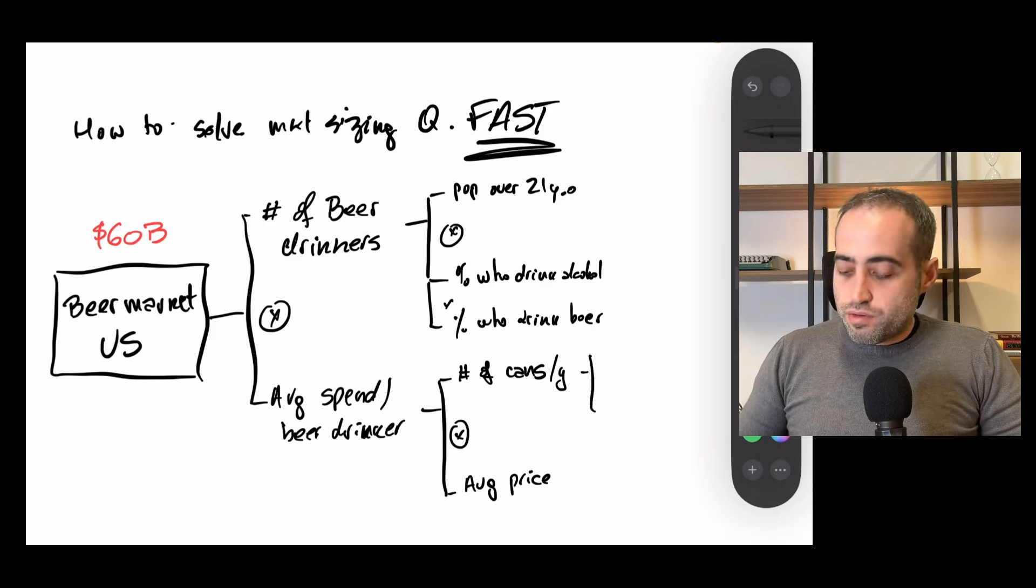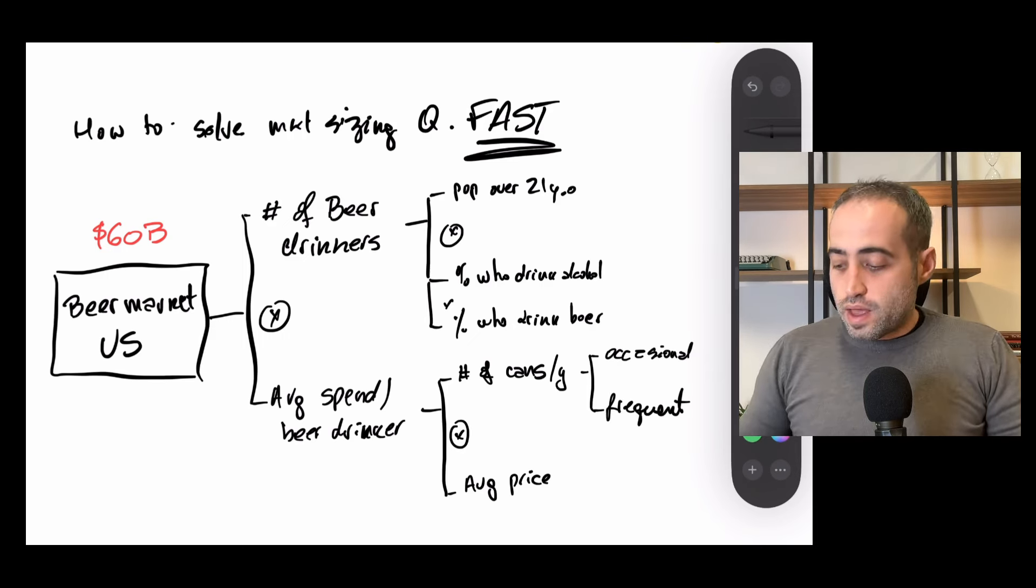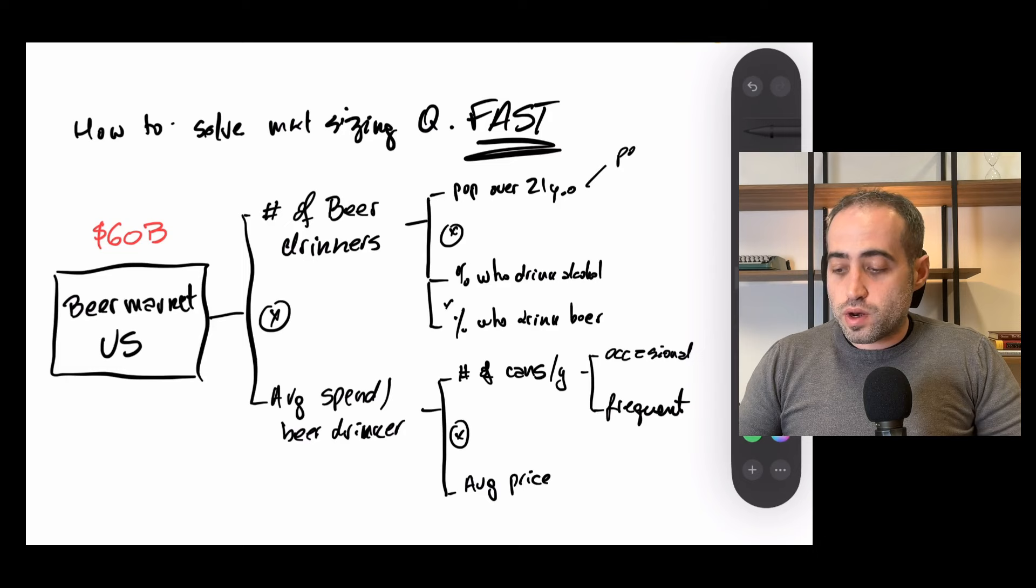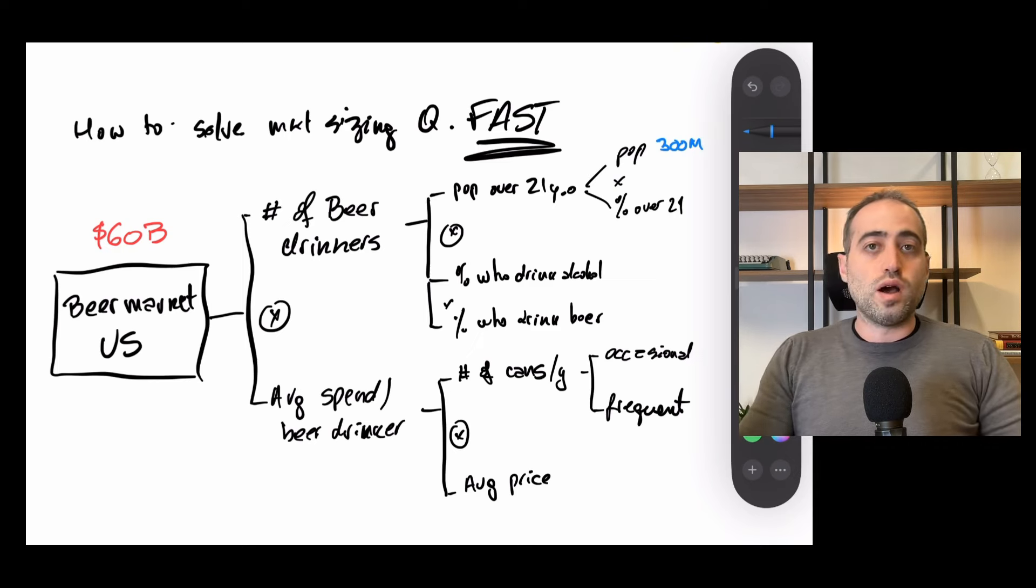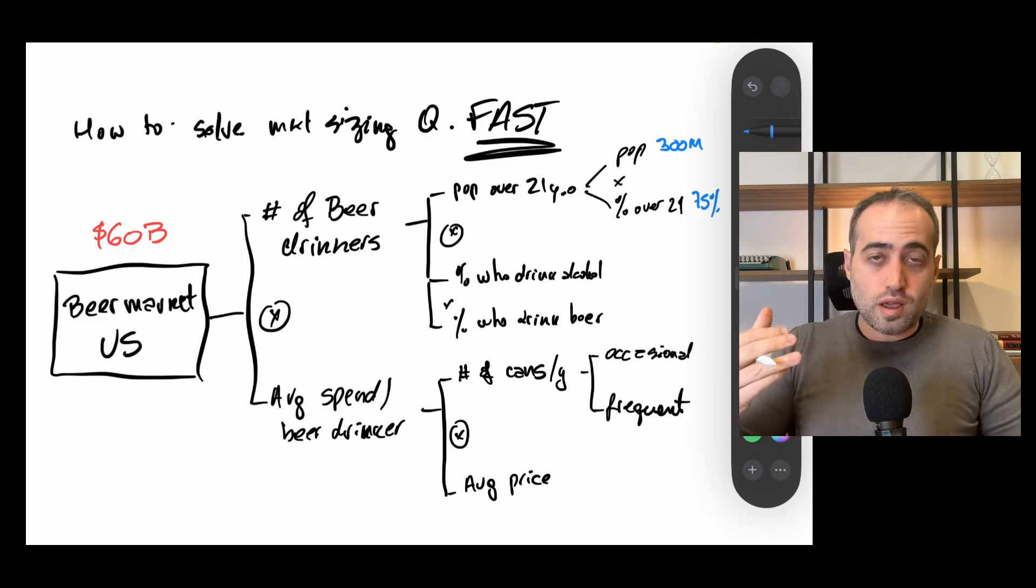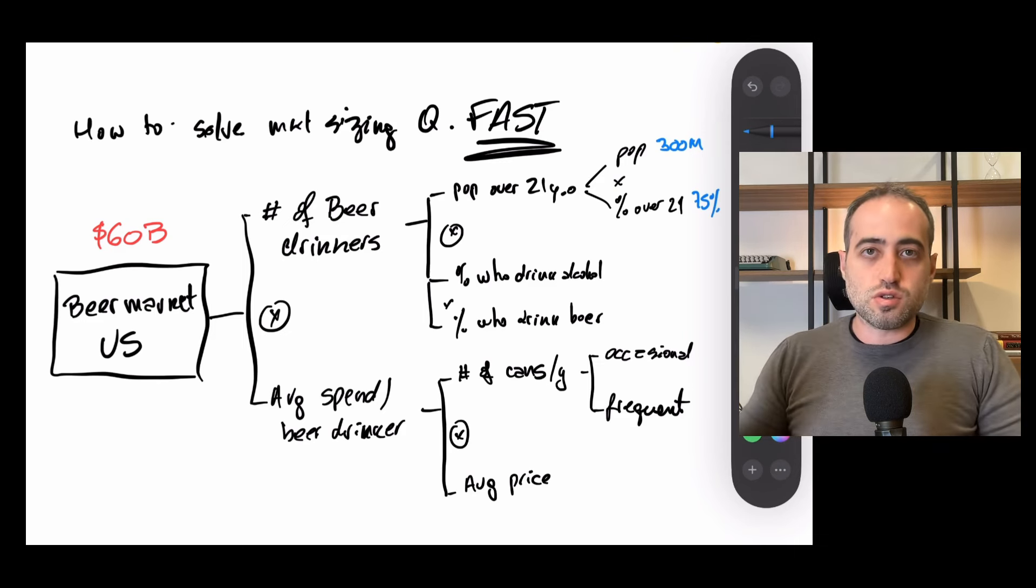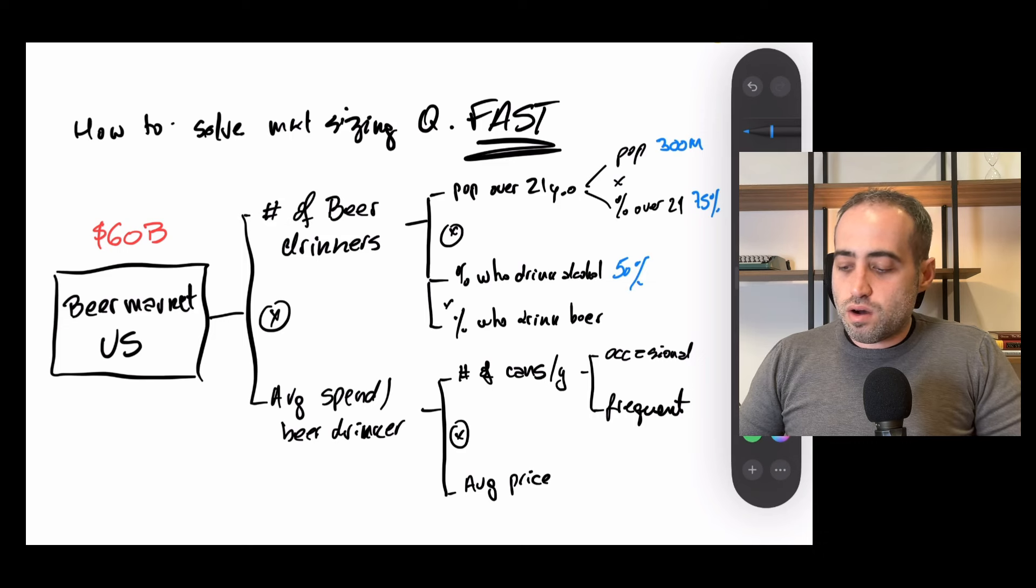And then the average number of cans I can do for occasional and for frequent beer drinkers. So then I need to do the math for each one of these. So population over 21 is the population times the percentage over 21, of course. So population, let's say 300 million people, percentage over 21 would be, I'll just make it easy for myself. I'll say it's 75%. In a real interview, I'd probably explore like how I got to this and et cetera. Percentage who drink alcohol. I'm not gonna justify my assumptions too much here, just to make the video shorter.